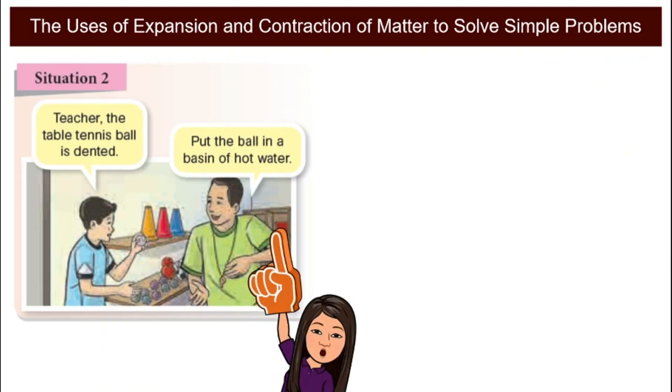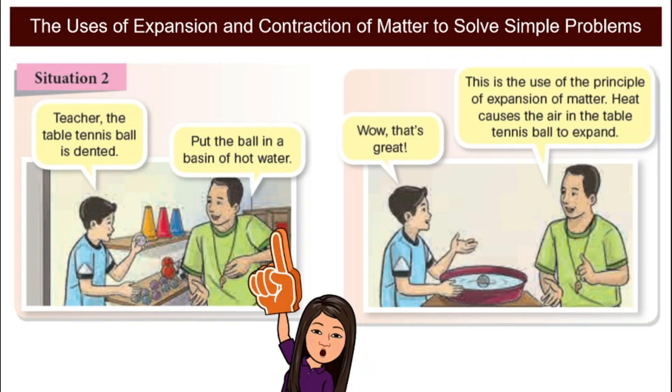Next, if you have a dented table tennis ball or a ping pong ball that is dented, maybe you accidentally stepped on it, how can you restore it? You can try to put the ball in a basin of hot water. When you put them in the hot water, the air inside the table tennis ball will expand and push the ball that is dented back to its normal or usual form. Then you can restore the ping pong ball.